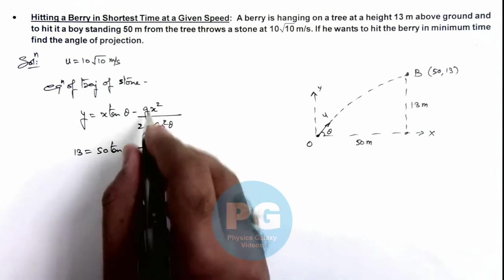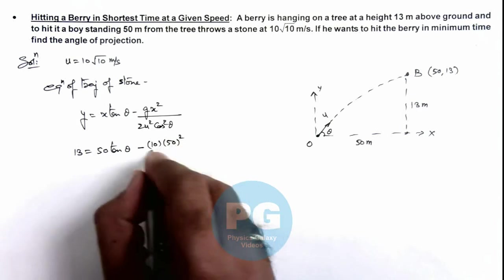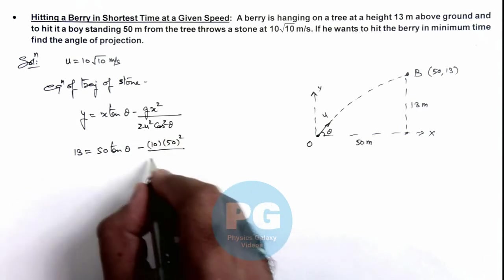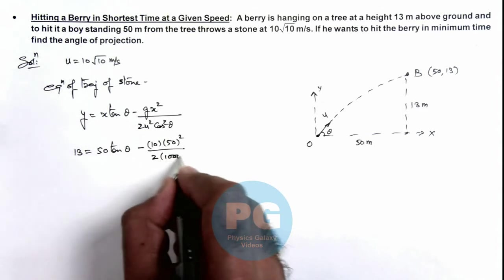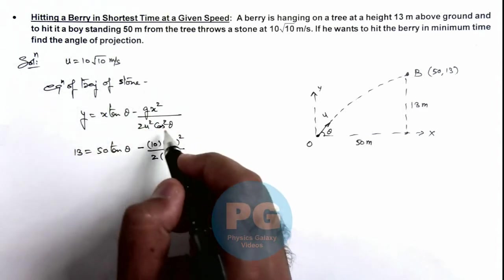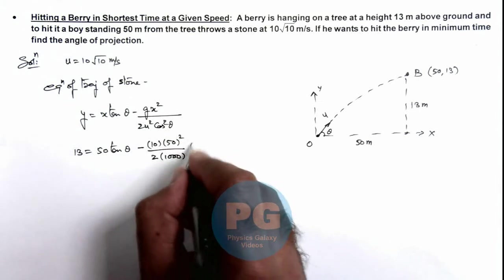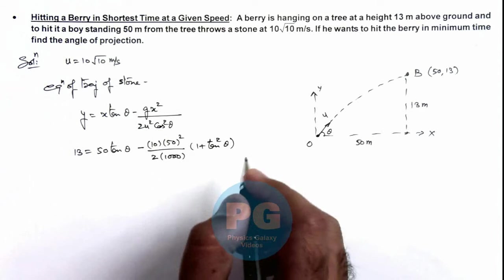Minus, here we can take g as 10, x we are taking as 50, divided by twice of u squared, this will be thousand because u is 10 root 10, and cos squared theta. Here we can write as sec squared theta which is 1 plus tan squared theta.